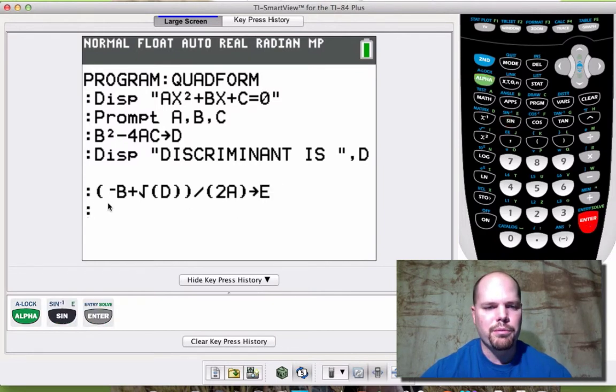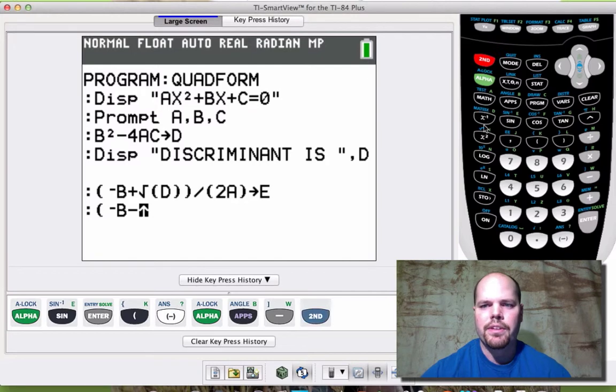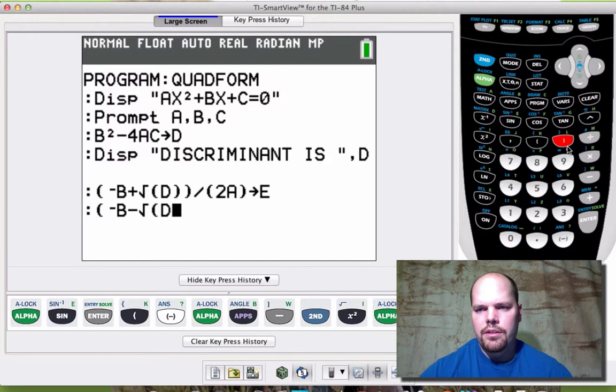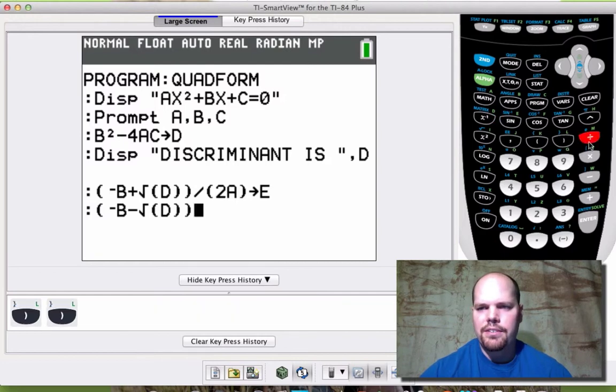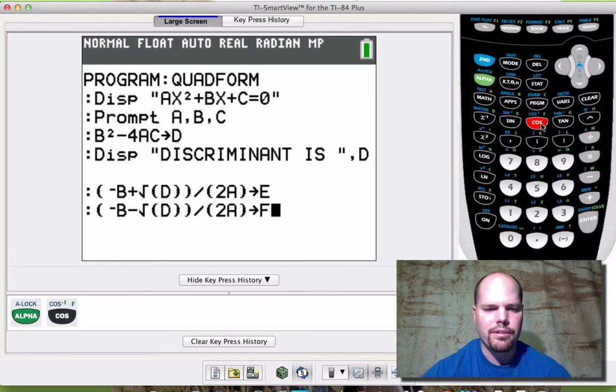Now there's two solutions. Now remember it was negative B plus or minus. Now we need to do the minus. I wish there was a copy and paste here, but there's not. So we need to type this again, but using minus. So the opposite of B minus the square root of D, close it, close it, and divide it by the quantity 2A. And close it. And then let's store that into F. Store it to alpha F.